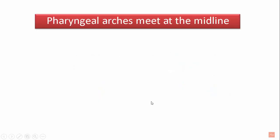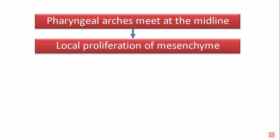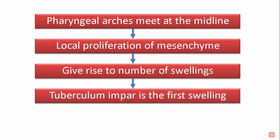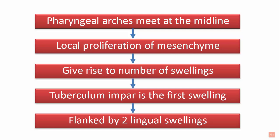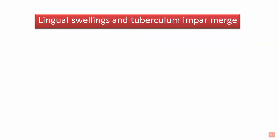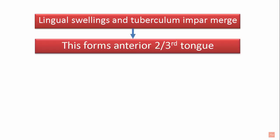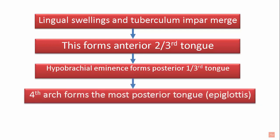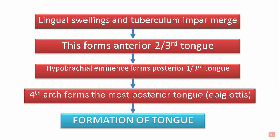The pharyngeal arches meet at the midline. Then there is local proliferation of mesenchymal cells, giving rise to a number of swellings. The first swelling seen is the tuberculum impar, which is then flanked by two lingual swellings. The lingual swellings and tuberculum impar merge together to form the anterior two-thirds of the tongue. The hypobranchial eminence forms the posterior one-third, and the fourth arch forms the most posterior part — the epiglottis. This is how the formation of the tongue happens.